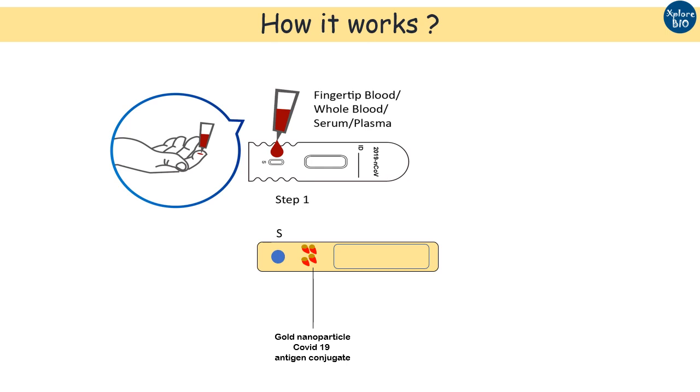Next are the three test areas containing human anti-IgM, anti-IgG, and rabbit anti-IgG named as M line, G line, and C line respectively.